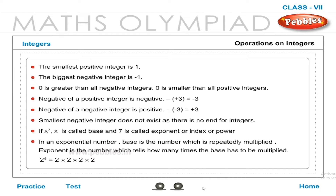In x to the power of 7, x is called the base and 7 is called the exponent, index, or power. In an exponential number, the base is the number which is repeatedly multiplied. The exponent tells how many times the base has to be multiplied. Example: 2⁴ = 2 × 2 × 2 × 2.